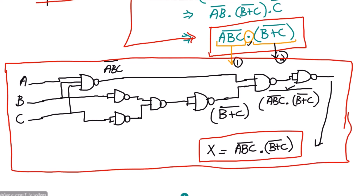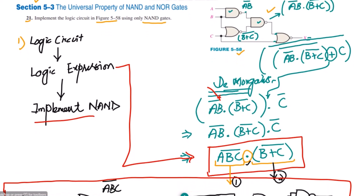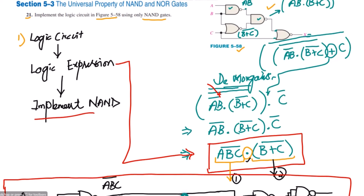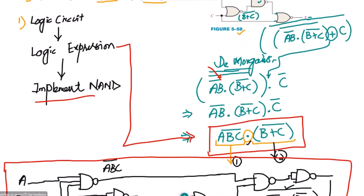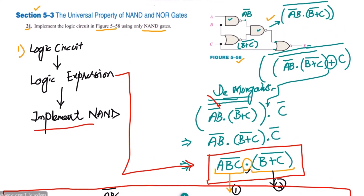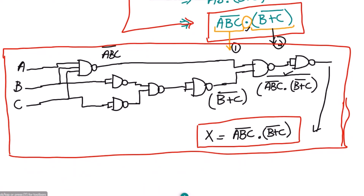We have seen the fundamental steps of converting any logic circuit to its NAND gates counterpart. In the next question, we will implement the same circuit using NOR gates — the steps will remain the same: find the logic expression from the circuit, then implement using NOR gates. That's enough for today; take care and see you in the next one. Thank you very much.